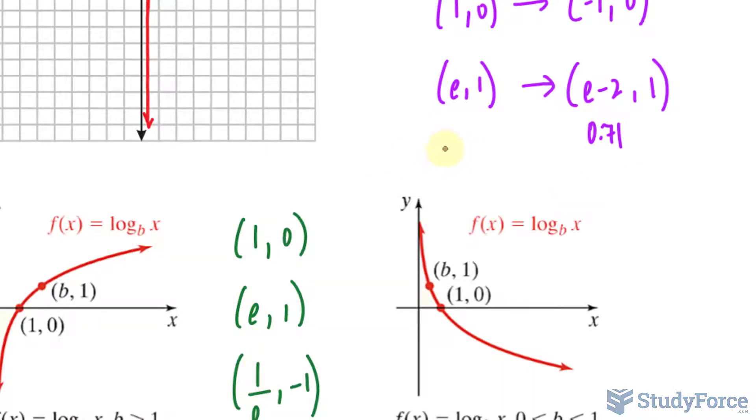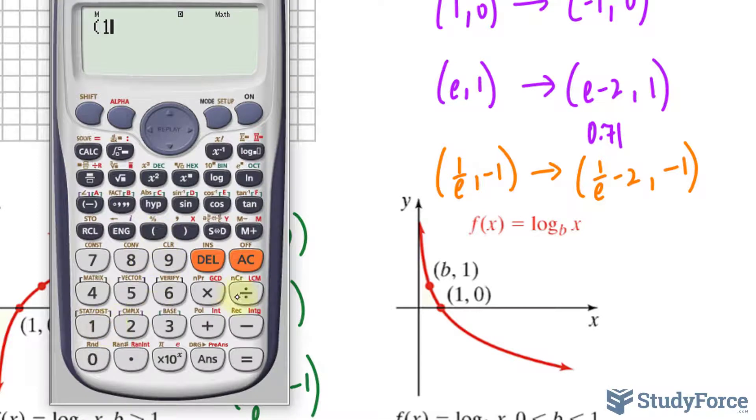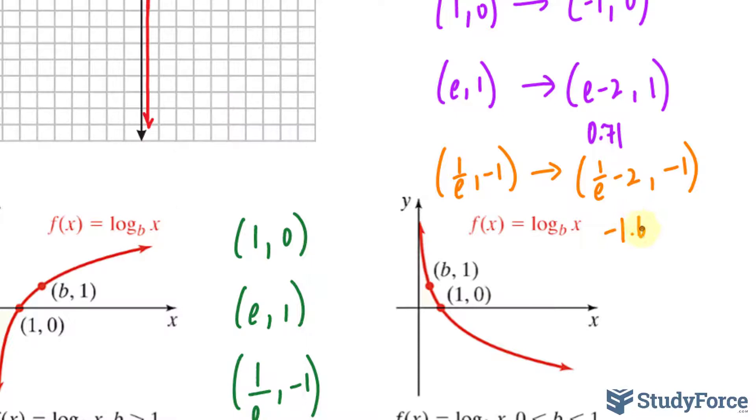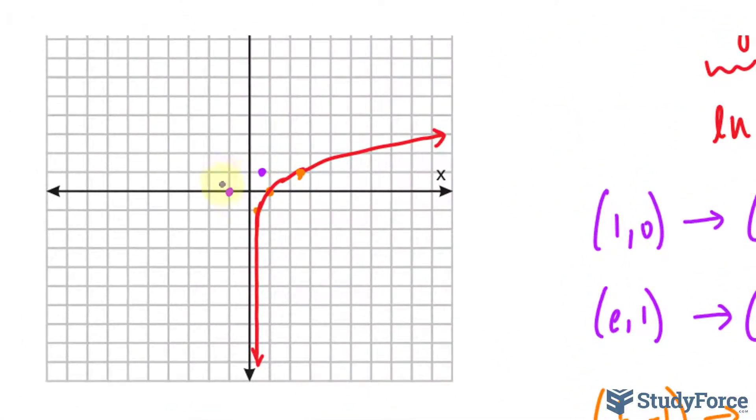And finally, our last point is 1 over e and negative 1. We will subtract the x coordinate by two units. So we have 1 over e minus 2 and negative 1. Let's use our calculator to do this quickly. 1 over 2.71 as e minus 2 and that happens to be negative 1.63. Negative 1.63 is somewhere between these two lines and it's negative 1, so we go down. OK, so that's our very first transformation. I will respect the vertical asymptote that exists. That hasn't changed.